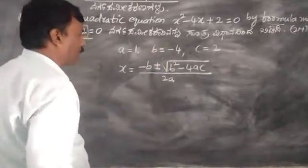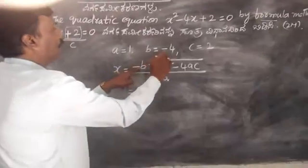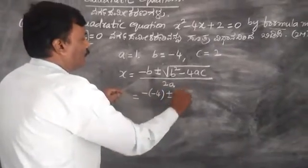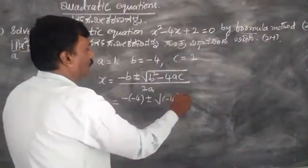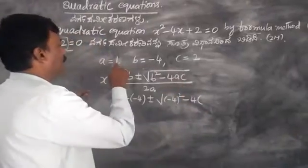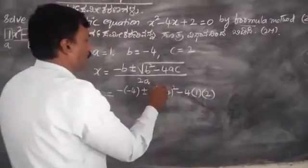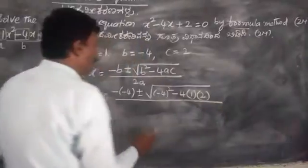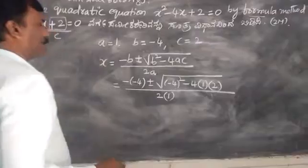Substituting the values: x equals minus 4, plus or minus the square root of (minus 4)² minus 4 times 1 times 2, divided by 2 times 1.